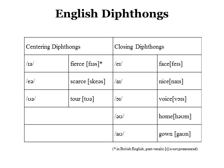English has eight diphthongs. Diphthongs are vowels that consist of a movement or glide from one vowel to another. There are centring diphthongs like /ɪə/, /eə/, and /ʊə/, and there are closing diphthongs like /eɪ/, /aɪ/, /ɔɪ/, /əʊ/, and /aʊ/.